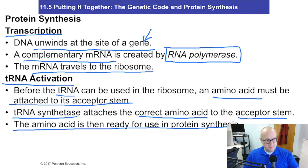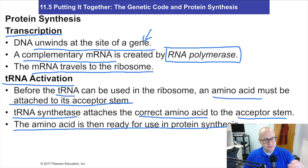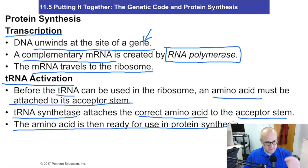So, messenger RNA gets built inside the nucleus, transfers itself outside the nucleus, and finds a ribosome to interact with. At some point, tRNA is activated by an enzyme called tRNA synthetase — it attaches an amino acid to the tRNA at what is known as the acceptor stem. So now we have our tRNA ready and our mRNA ready for protein synthesis.